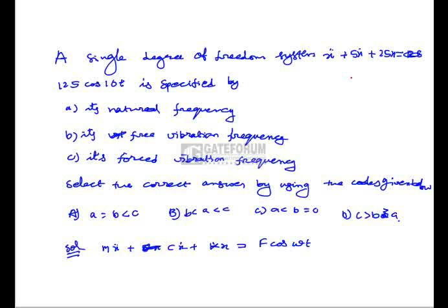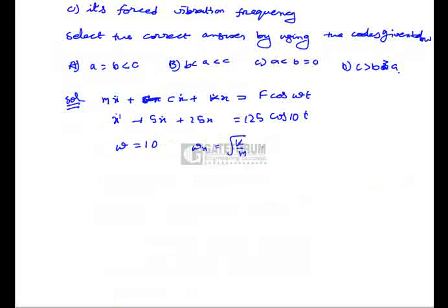Comparing with the given equation x̄ + 5ẋ + 25x = 125 cos(10t), we get ω = 10 (forced vibration frequency) and ωₙ = √(k/m) = √(25/1) = 5 (natural frequency). So ωₙ < ω. The free vibration frequency must be less than the natural frequency. Therefore, free vibration frequency < natural frequency < forced vibration frequency, i.e., B < A < C. The correct option is B.